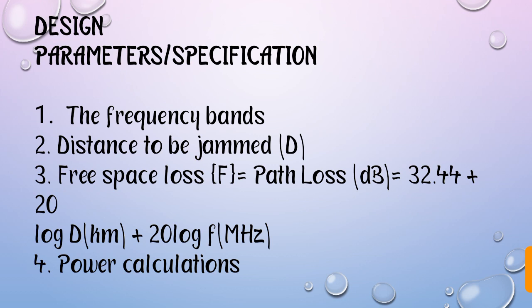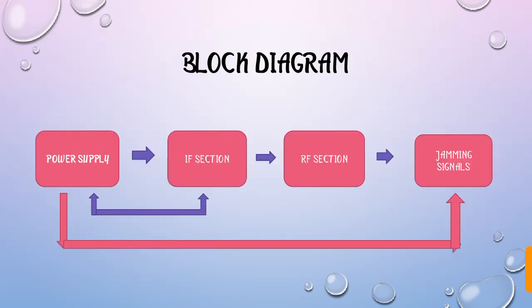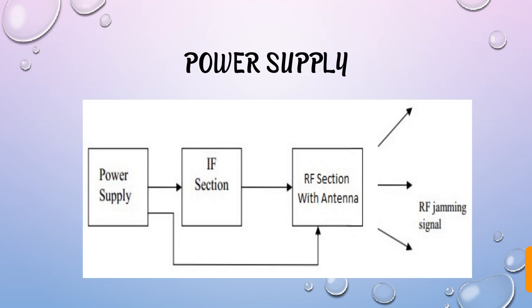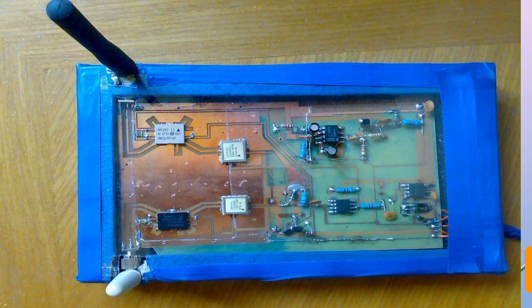Now comes the block diagram, which includes: Power Supply, IF section, RF section, and Jamming Signal. This is the architecture of the power supply, which feeds the IF section and RF section with antenna. You can see the RF jamming signals indicated by arrows. This is the actual figure of the jamming device — these two are antennas which receive and transmit the signals.